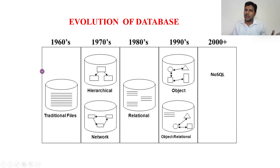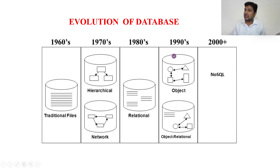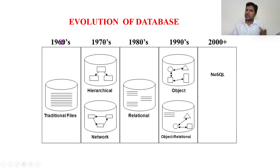Now let us see the evolution of the database. In the 1960s there was the traditional file system, in the 1970s the hierarchical and network models, in the 1980s the relational model, in the 1990s object-oriented and object-relational models, and from 2000 onwards NoSQL. Let us go through each one.